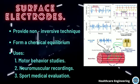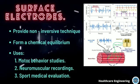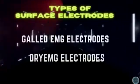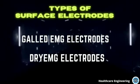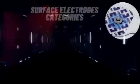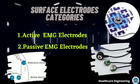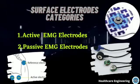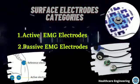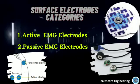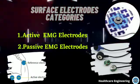Surface electrodes are used in motor behavior studies, neuromuscular recordings, and sport medical evaluation. The types of surface electrodes include gelled EMG electrodes and dry EMG electrodes. They can be further divided into active EMG electrodes, which contain a pre-amplifier attachment, and passive EMG electrodes, which are connected to an external amplification circuitry.